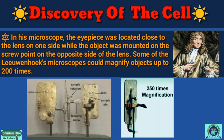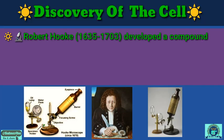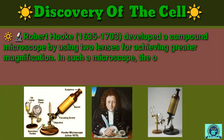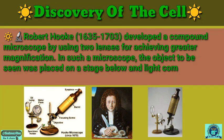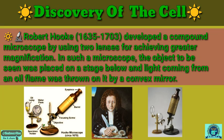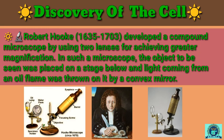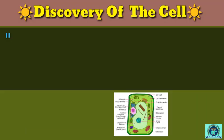Some of Leeuwenhoek's microscopes could magnify objects up to 200 times. Later, Robert Hooke (1635–1703) developed a compound microscope using two lenses for achieving greater magnification. In such a microscope, the object to be seen was placed on a stage below, and light coming from an oil flame was thrown on it by a convex mirror.